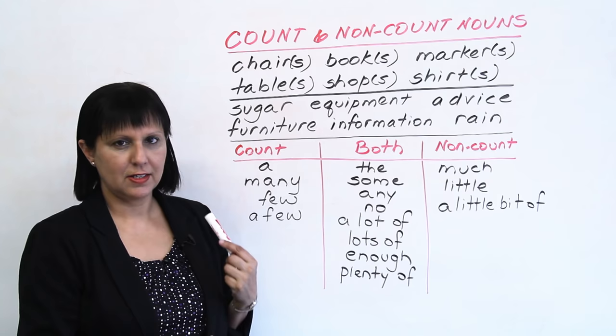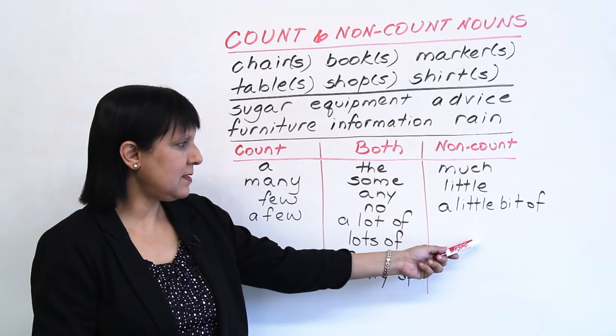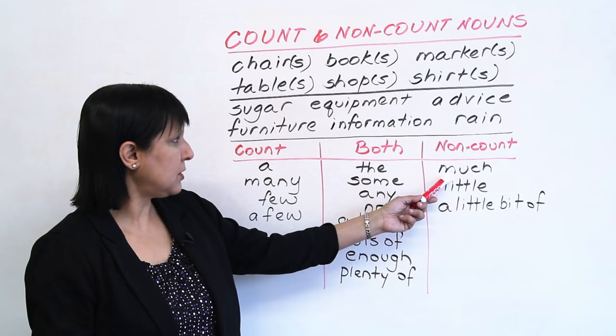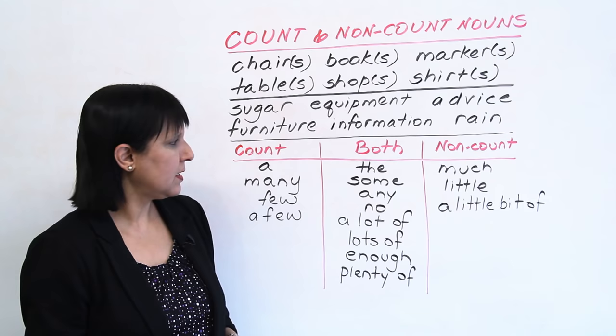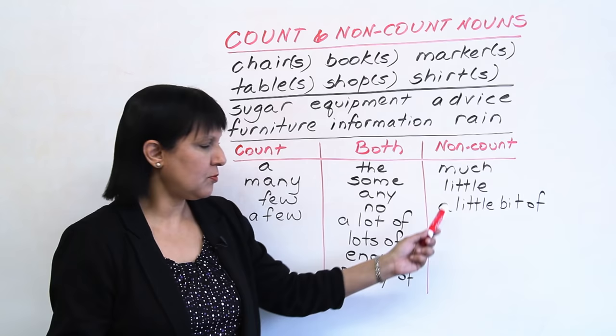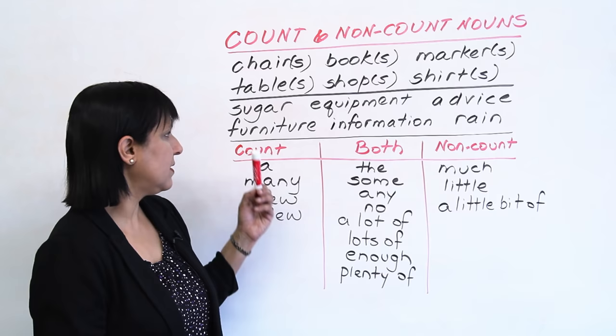Now let's look at the other side. These you can only use with the uncountable nouns. For example, 'much' — 'much information,' 'little information,' 'a little bit of sugar.' So these three, which are listed here under the non-count, you can only use with the uncountable nouns.